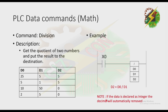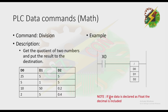Take note: if the data is declared as integer, the decimal will automatically be removed. In our example, D0 and D1 are integers. However, if the data is declared as float, the decimal is included — so 0.2 and 0.4 will appear. You need to declare the data as float to get the decimal values.